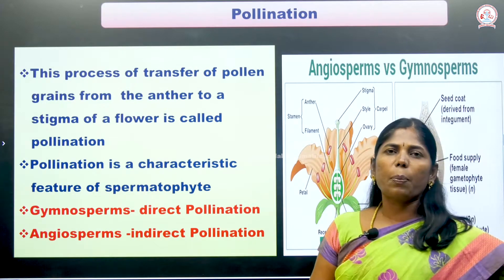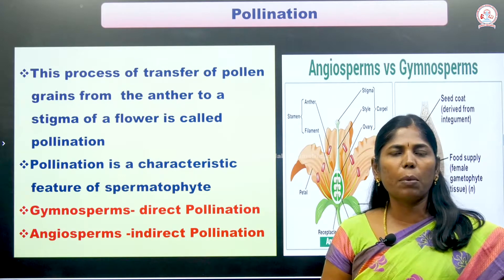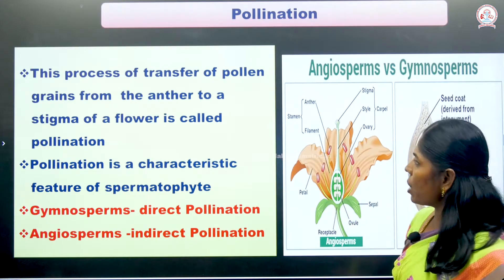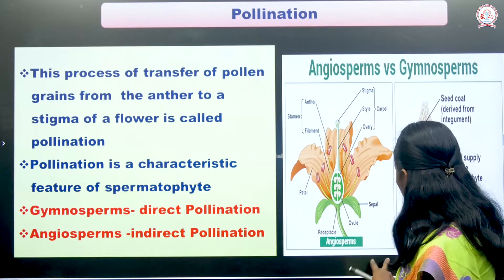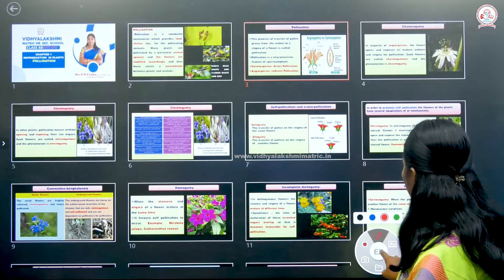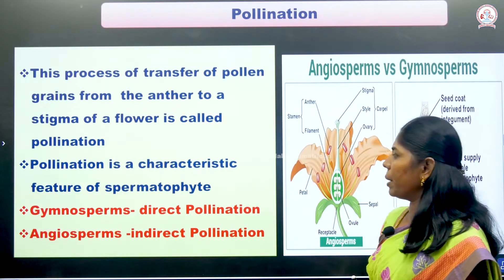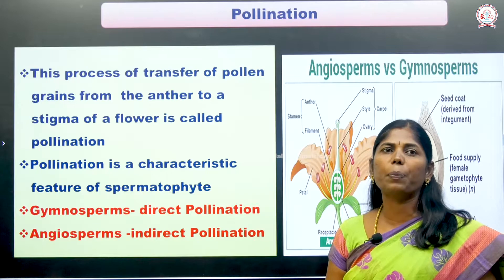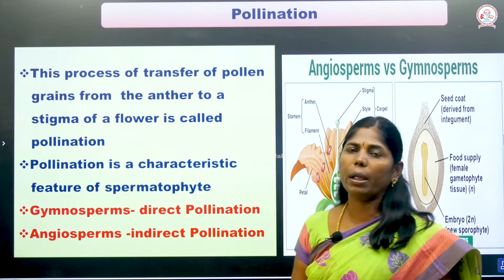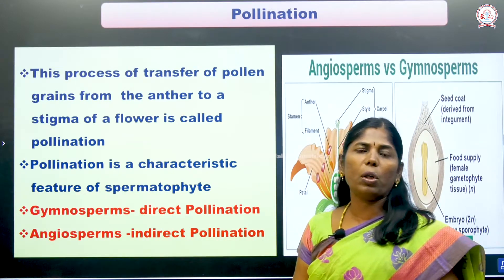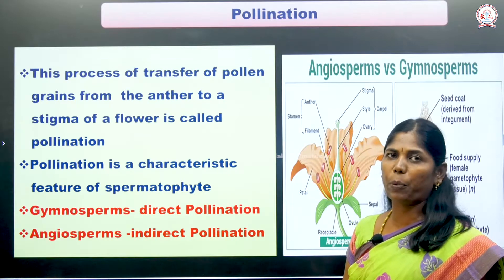Pollination is defined as the transfer of pollen grains from anther to stigma of a flower. Pollination is a characteristic feature of spermatophytes — seed-producing plants. Both gymnosperms and angiosperms are considered seed-producing plants. Angiosperms have an ovary with ovules, while in gymnosperms only naked ovules are present. Sperma means seed.